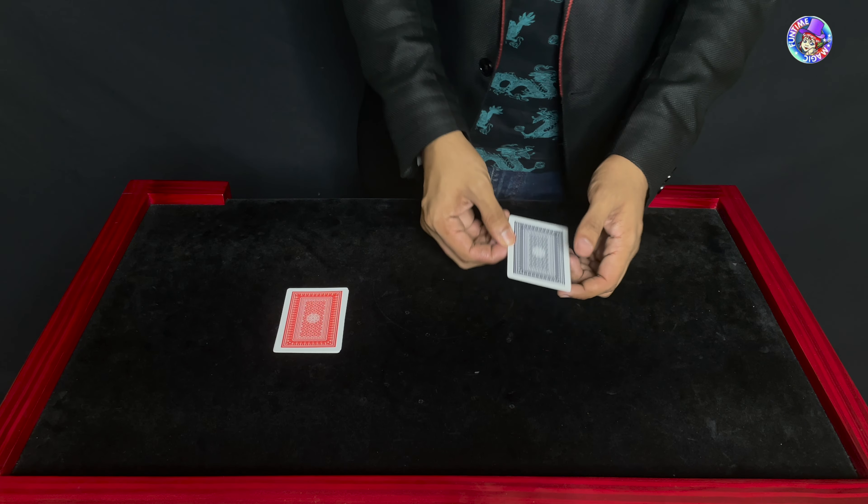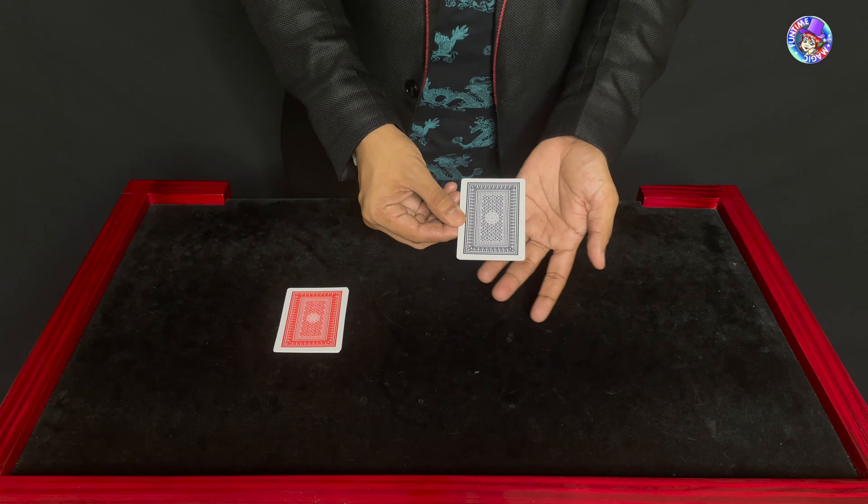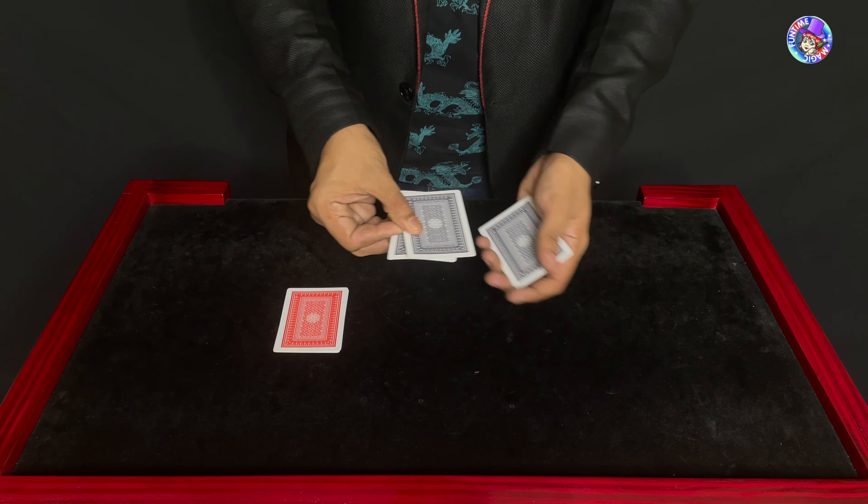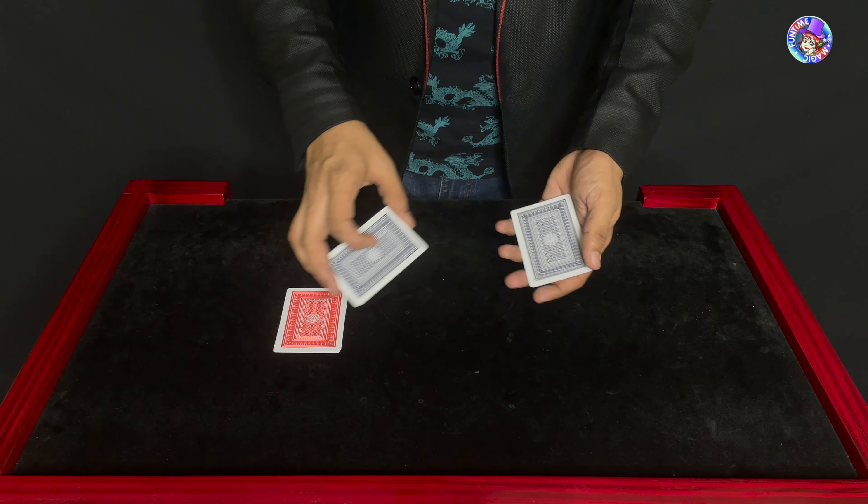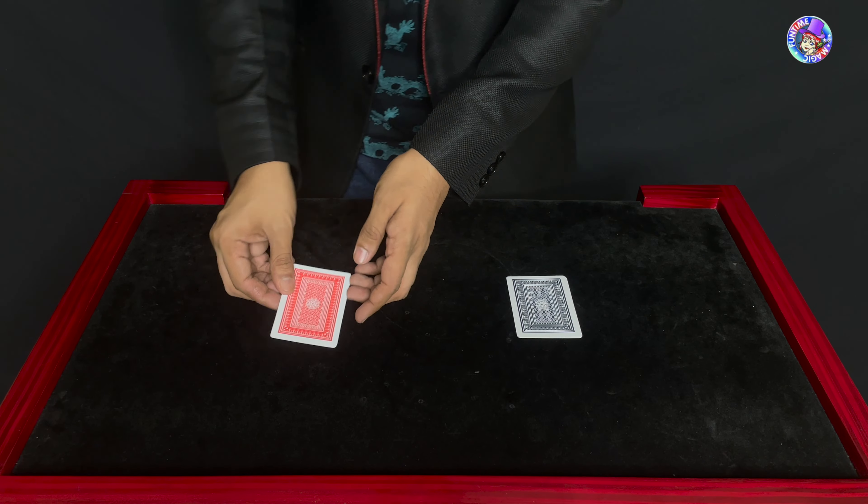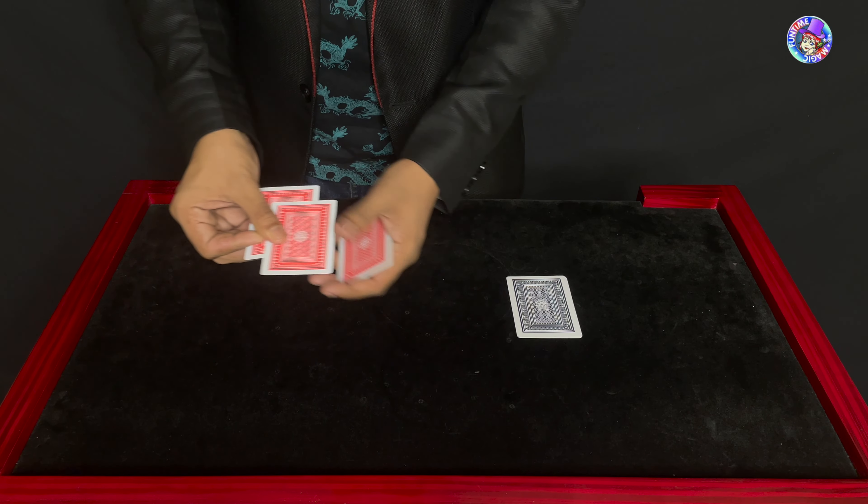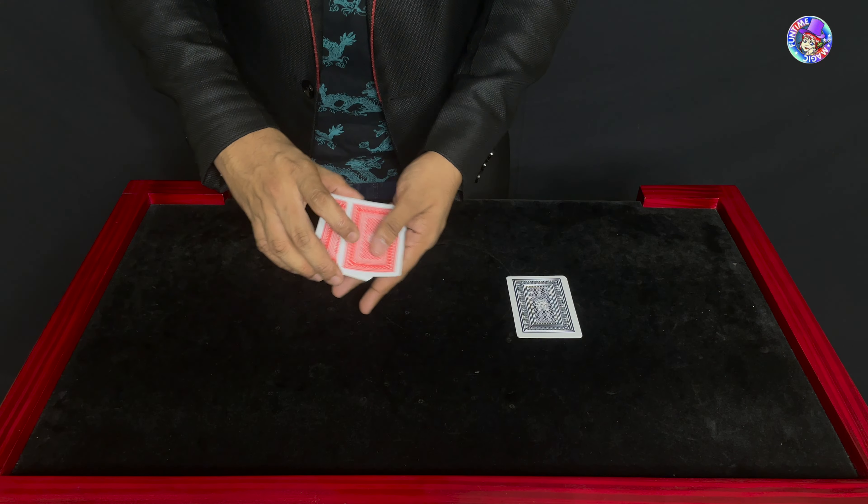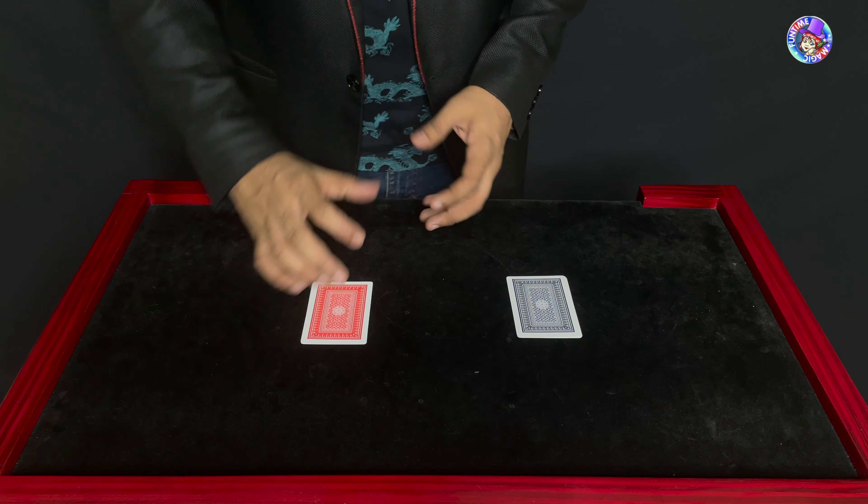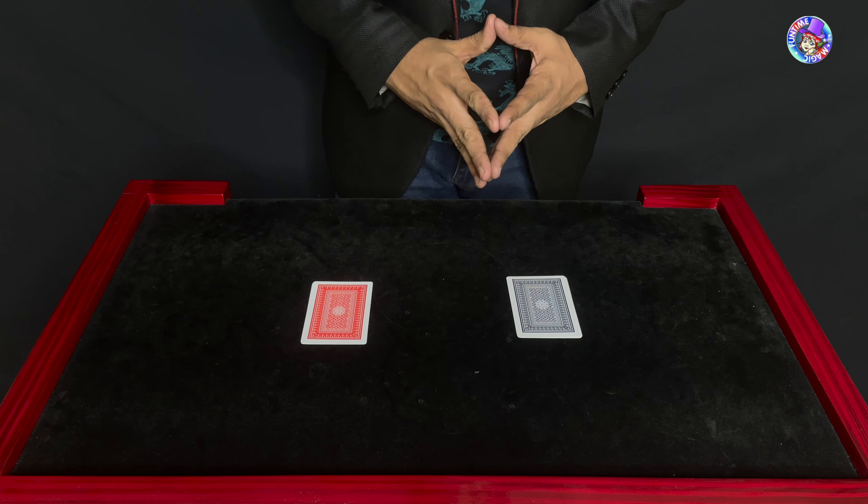Alright, we're going to try something with these two piles of cards. We've got four blue back cards right here and four red back cards right here. Now they're not only just four cards, but these are actually the four fours. So right now I'd like you to choose a black four.